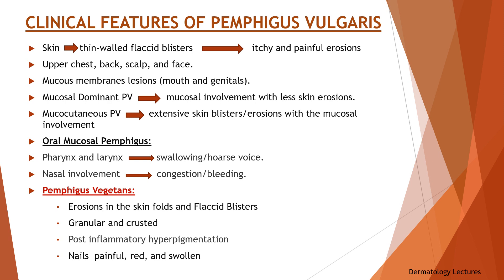The mucosal dominant type presents with mucosal involvement with less skin erosions. The mucocutaneous type presents with extensive skin blisters and erosions with mucosal involvement. The inside of the mouth is commonly involved. Involvement of the pharynx and larynx causes pain on swallowing and hoarseness of voice. Nasal involvement causes congestion and bleeding. The conjunctiva, esophagus, labia, vagina, cervix, penis, urethra, and anus may also be affected.